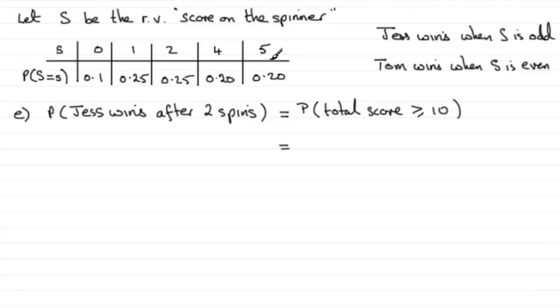It must mean that the spin has got to come up with a 5 and then another 5, because 5 is an odd number and it will give us 10.